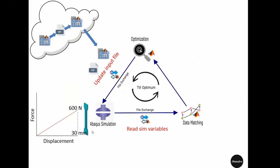For illustrating the process of parameter optimization, a dog bone tensile model is used in this video. It is fixed at one end and pulled from the other end. We will optimize the Young's modulus for this model such that if the model is pulled by 30 millimeters, the force response reaches 600 Newton.